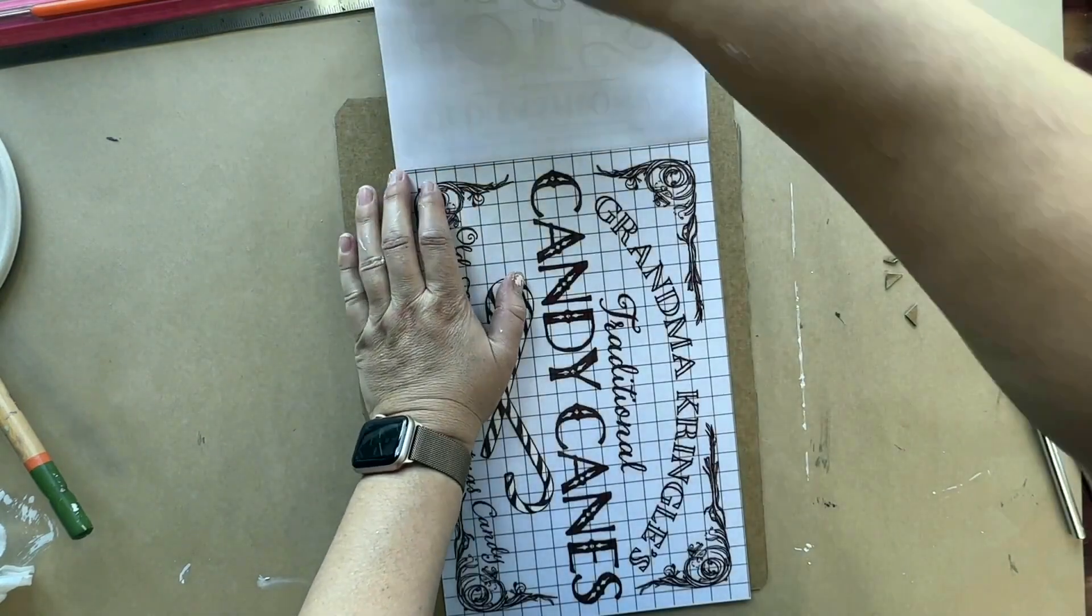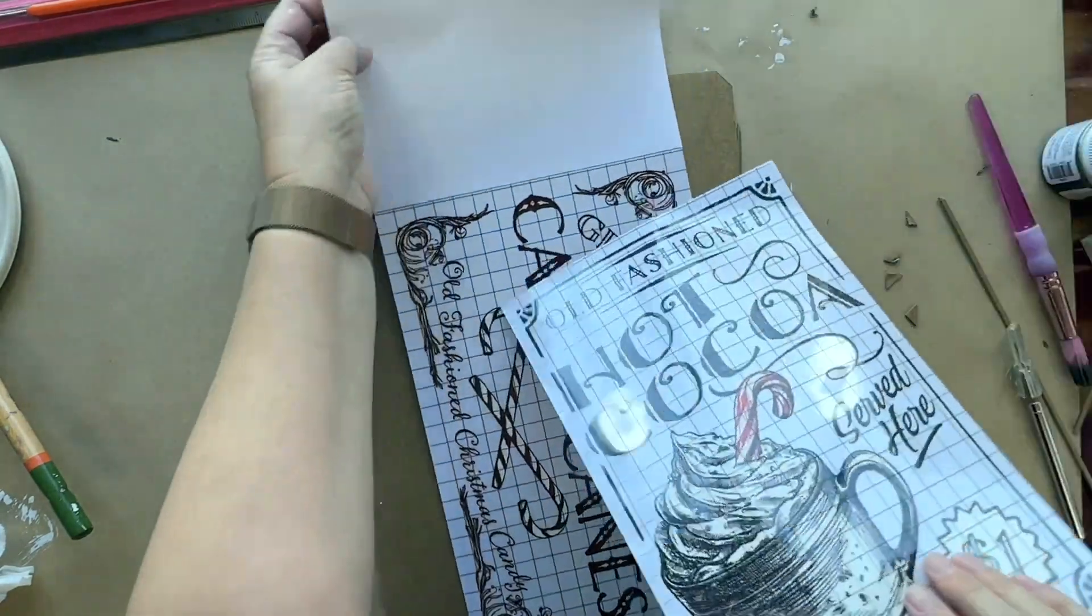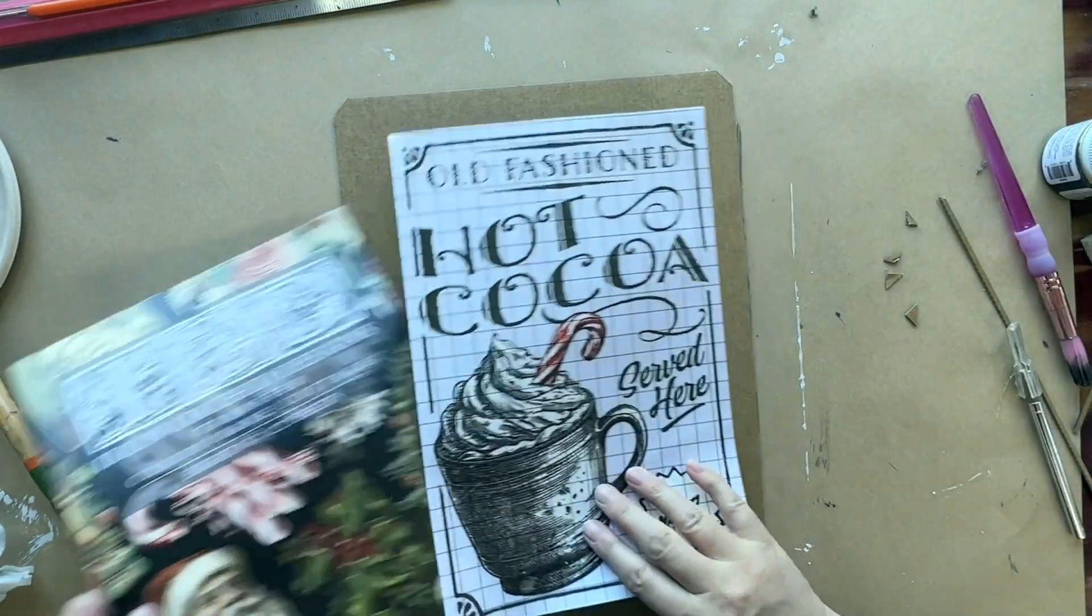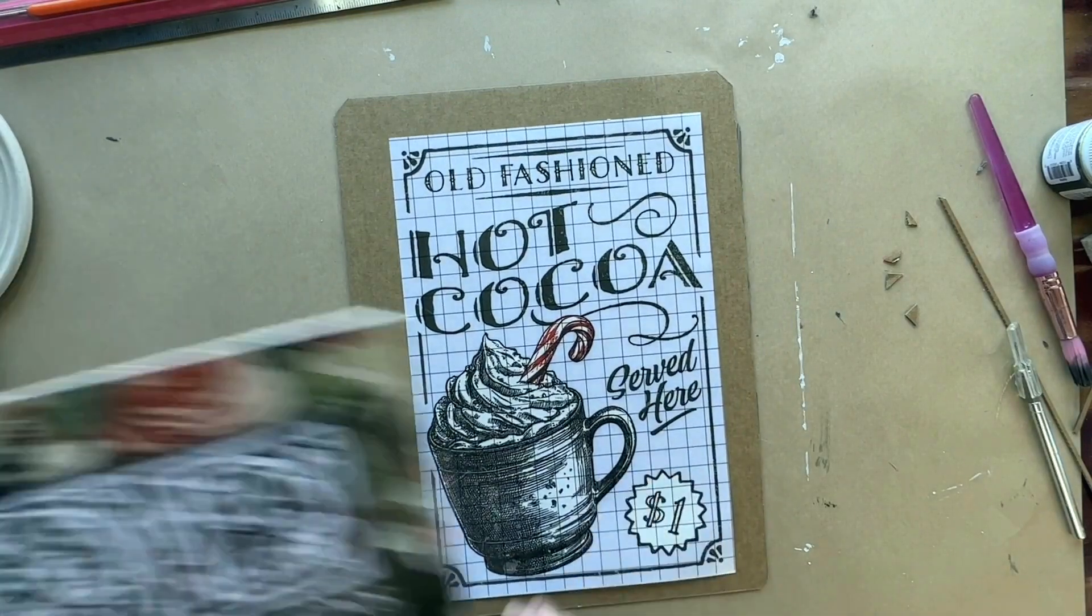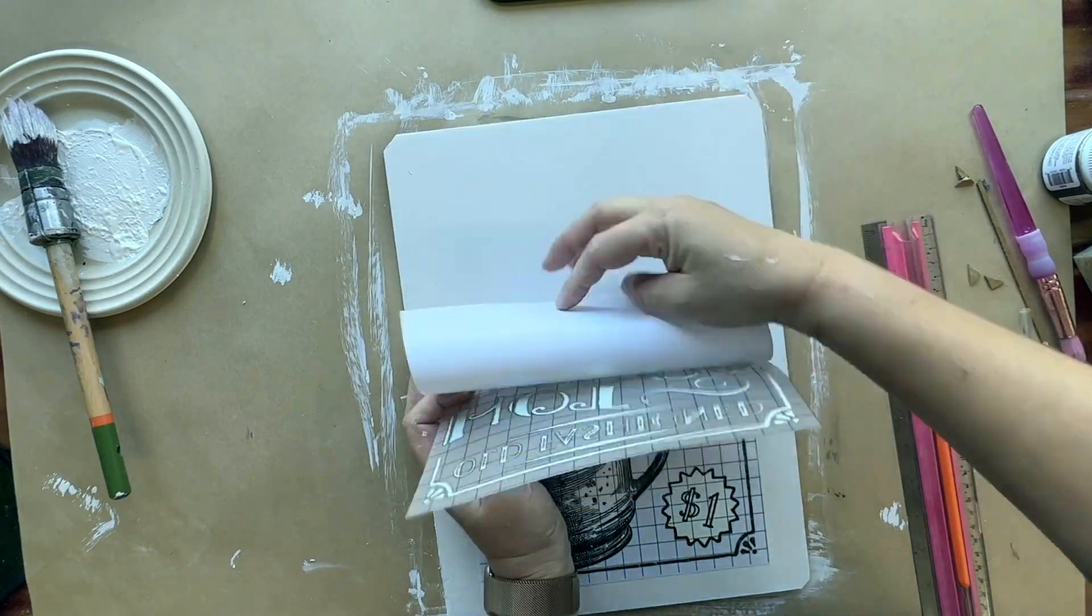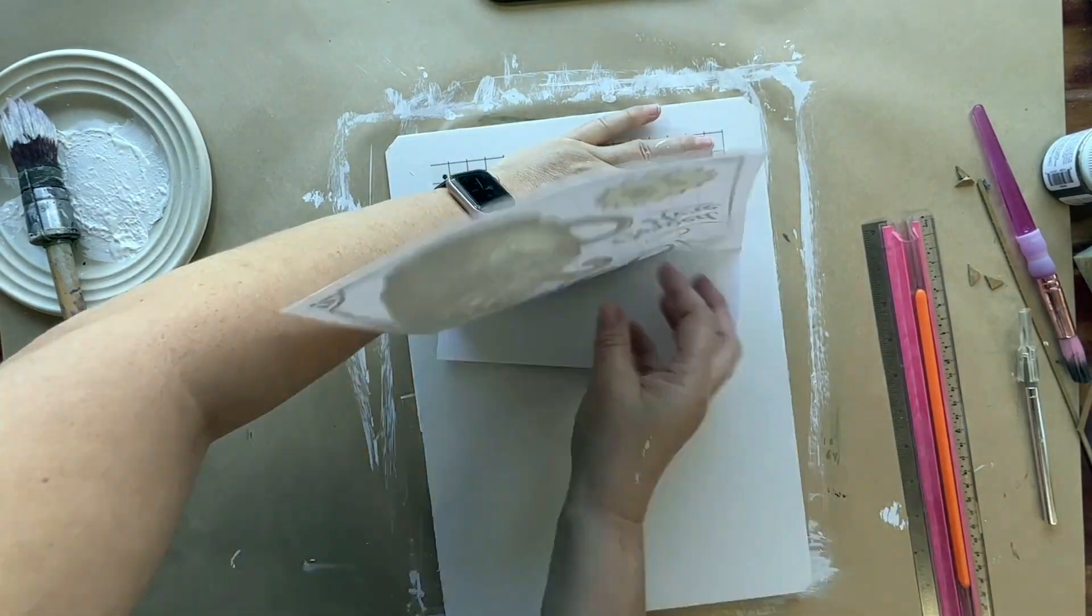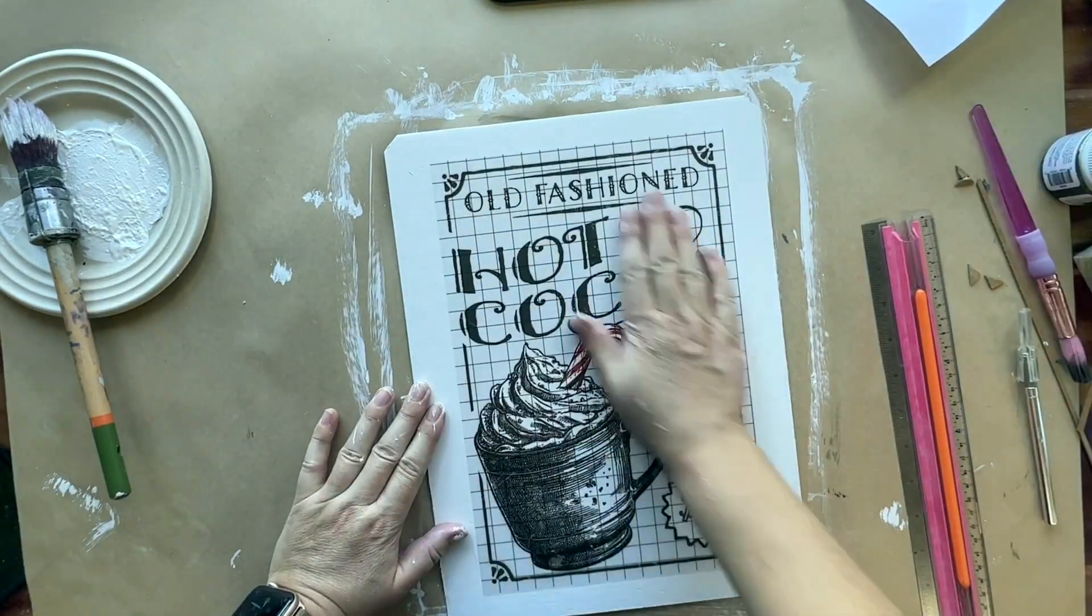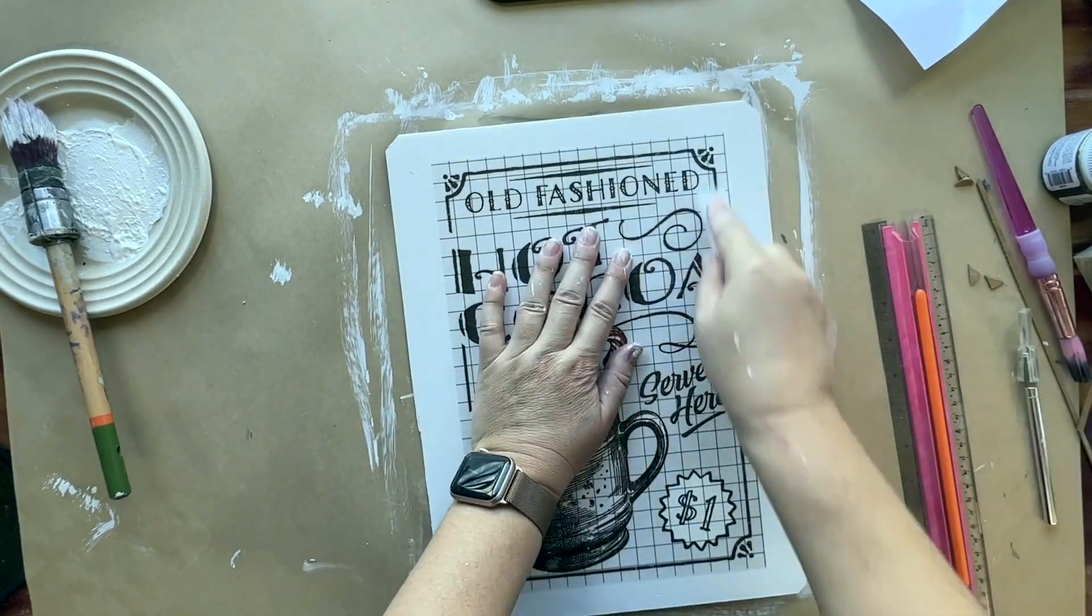I'm just going to tear out the page and see where I want it positioned on the cardboard. The image has got a frame around it, so because of that I want to make sure I get it exactly in the center of the board. Otherwise I'll be cutting off the frame.